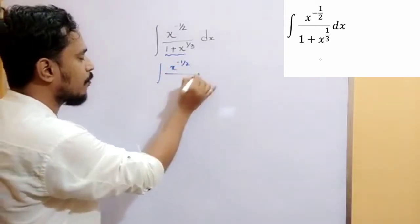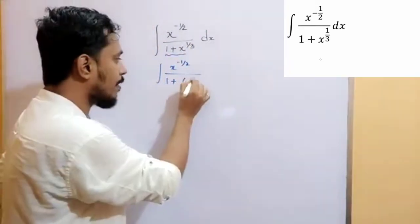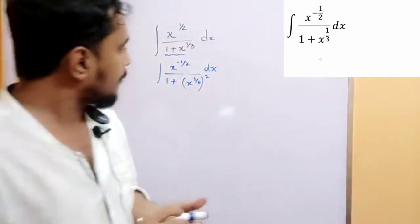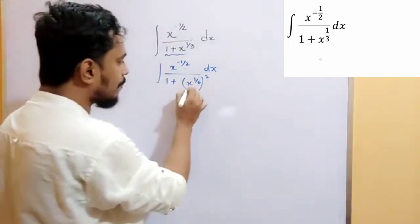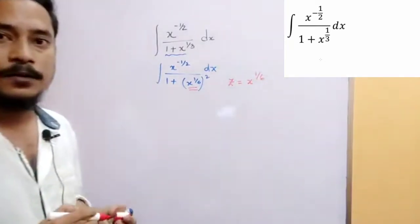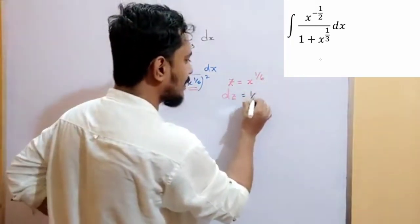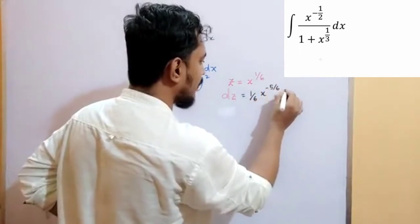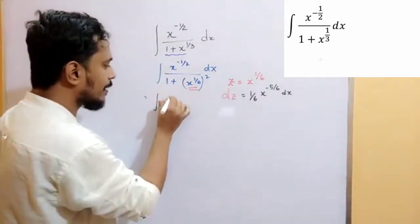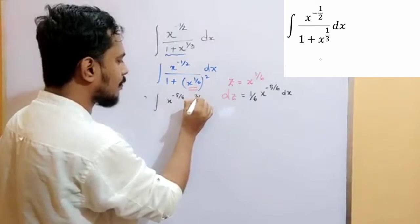x to the power minus 1 by 2 by 1 plus, we can write down x to the power 1 by 3 as x to the power 1 by 6 plus square x. Now, substitute that part as z. So, what will be dz? dz will be 1 by 6 x to the power minus 5 by 6 dx. We can write down x to the power minus 1 by 2 as x to the power minus 5 by 6 into x to the power 2 by 6.